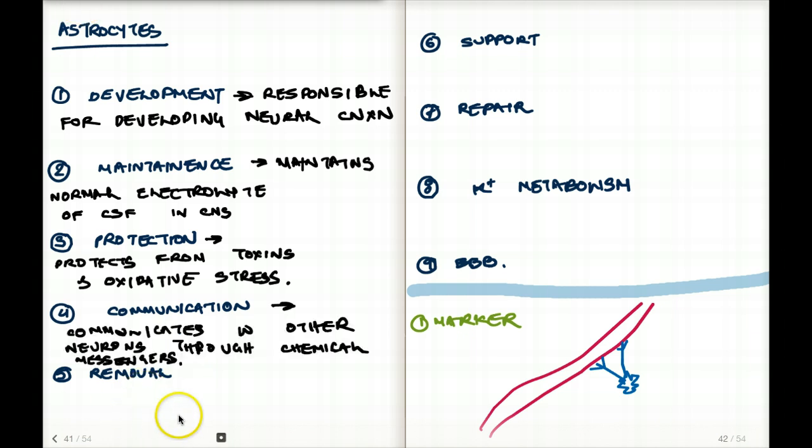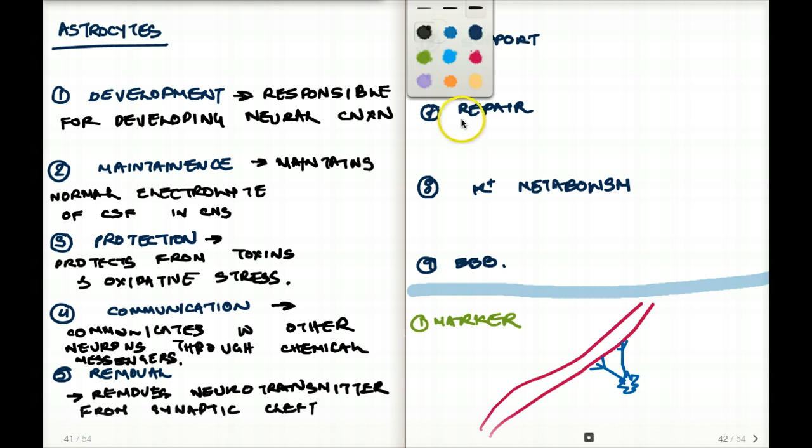The following one is removal. What does it remove from the CNS? What is the job of astrocytes? Astrocytes remove neurotransmitters from the synaptic cleft. Now, apart from all these, astrocytes also give support to the central nervous system. They're responsible for repair, for potassium metabolism, and also for building the blood-brain barrier.